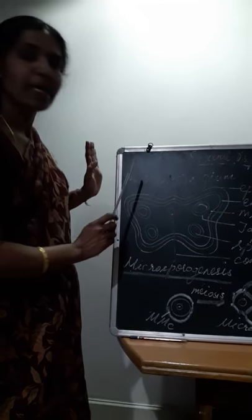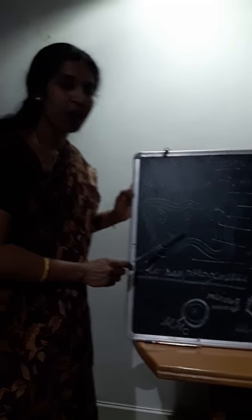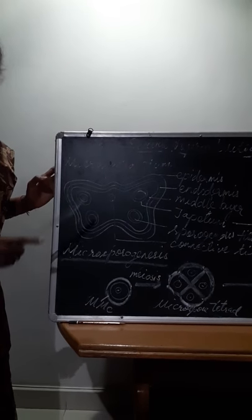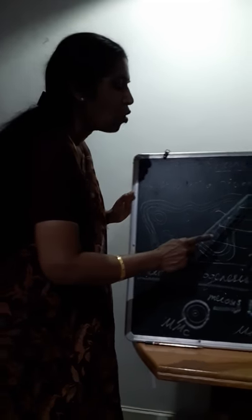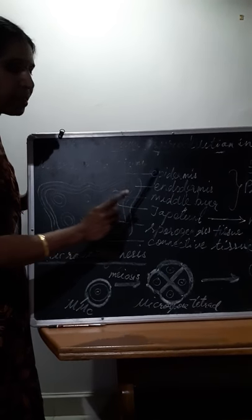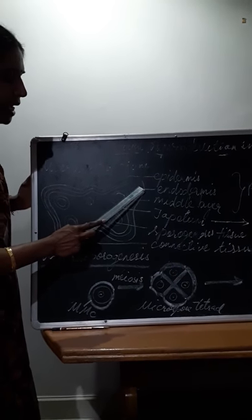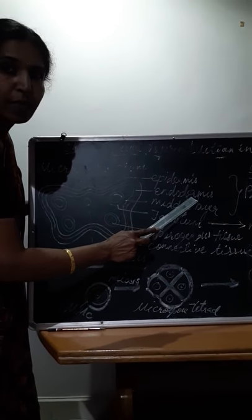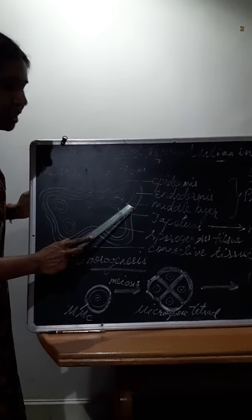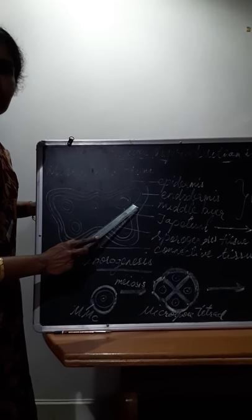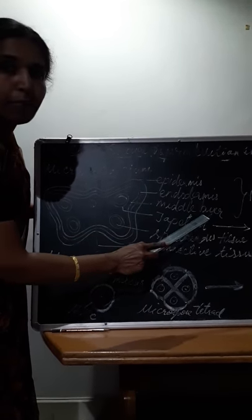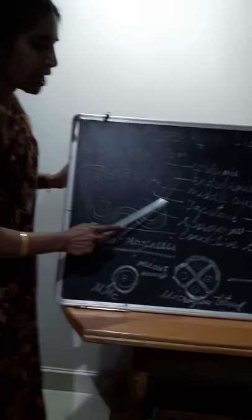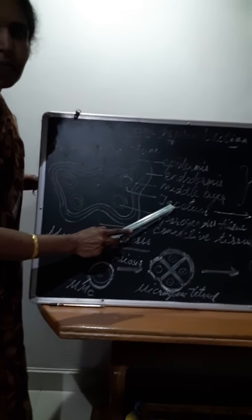If you take the cross section of anther, you will find four different layers. What are the four different layers? The outermost layer is epidermis. The second layer which is thick wall, that is endothecium. The third layer which is made up of one, two, three layer cell thickness, that is known as middle layer. The fourth layer is made up of dead cytoplasm, that is tapetum.